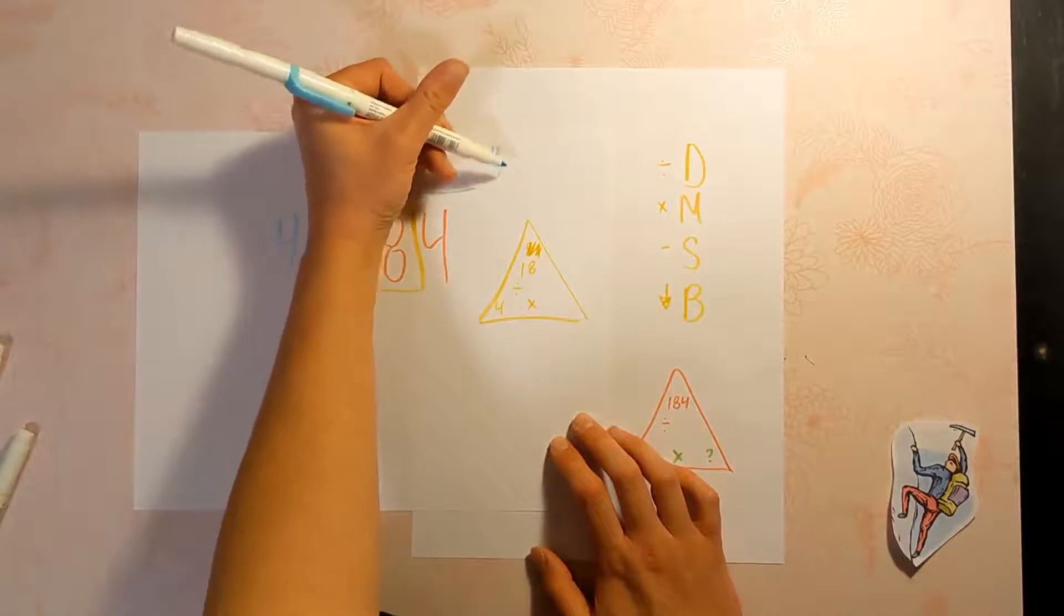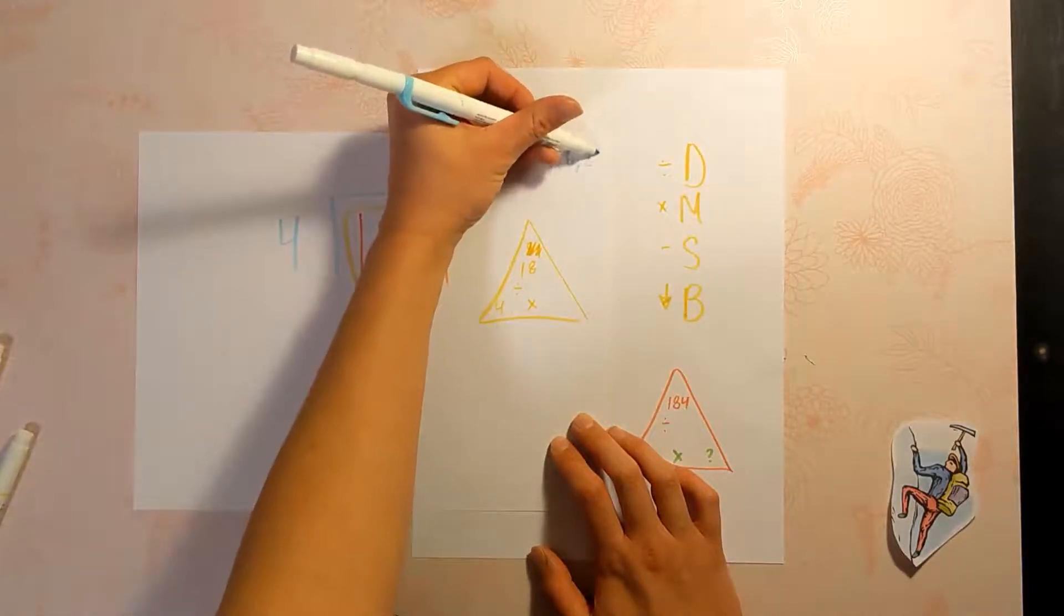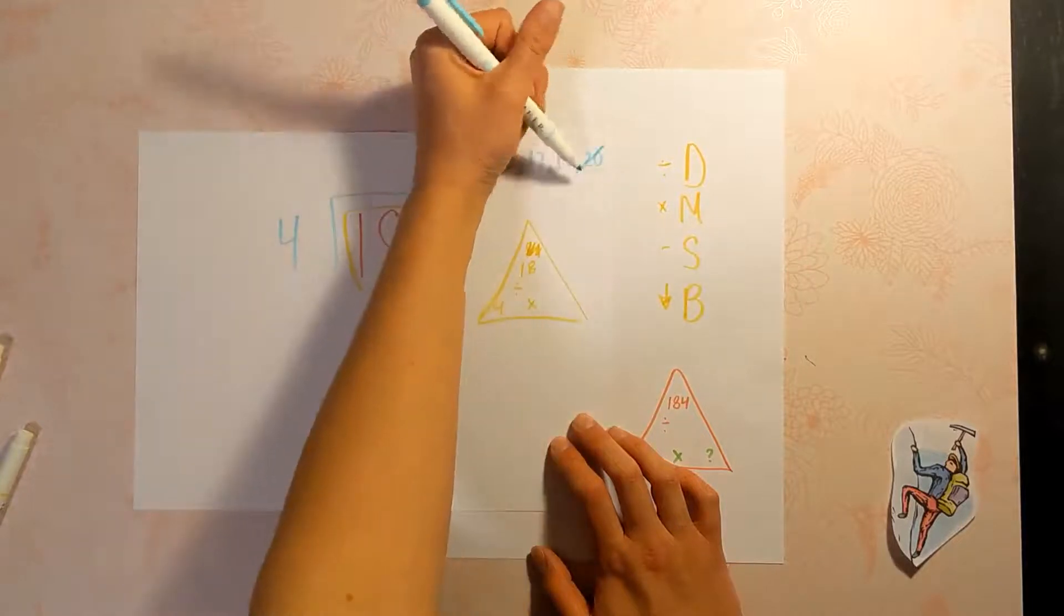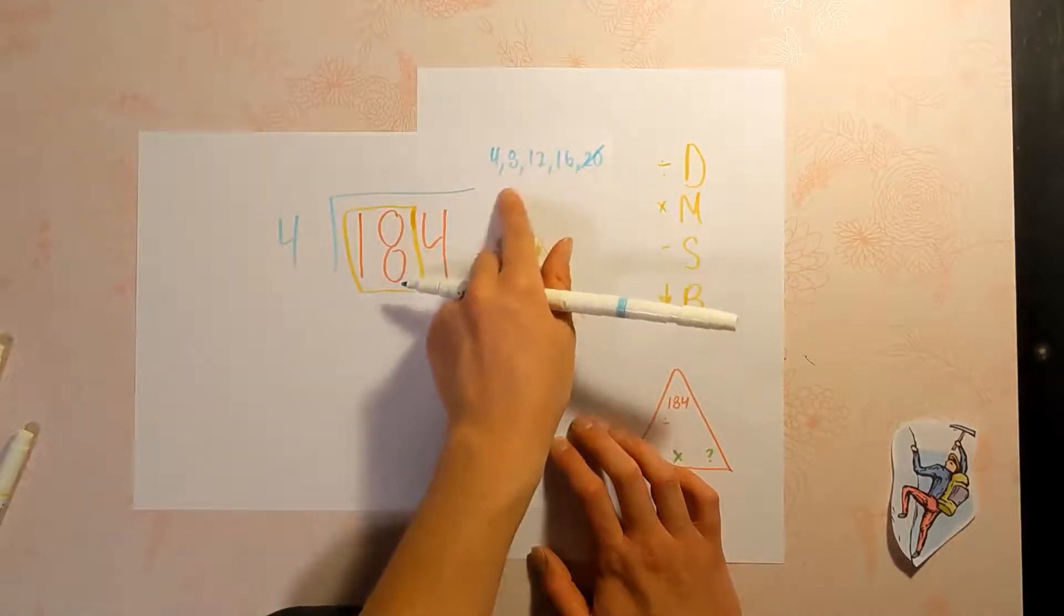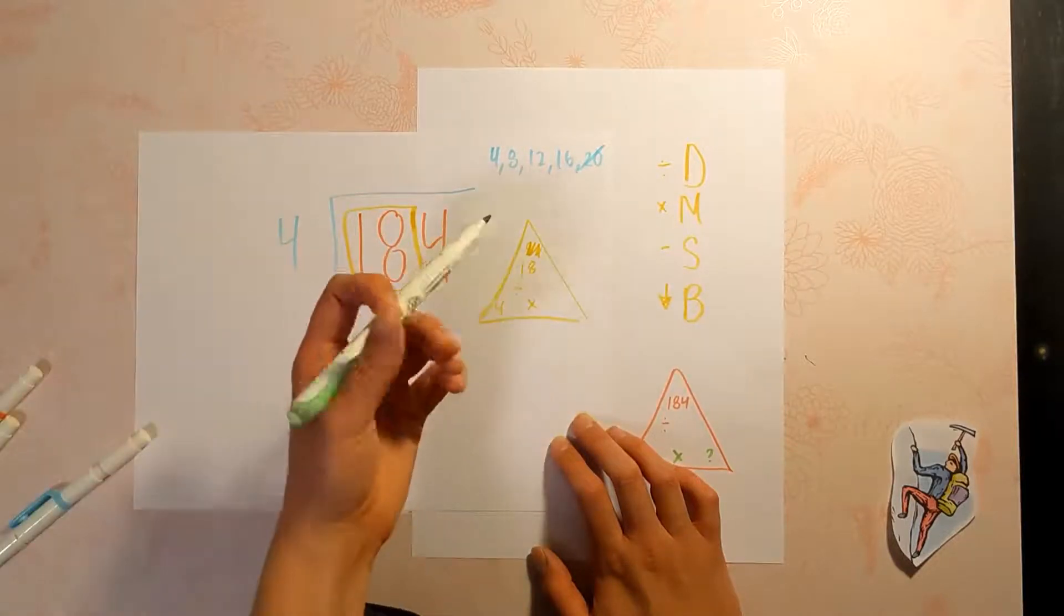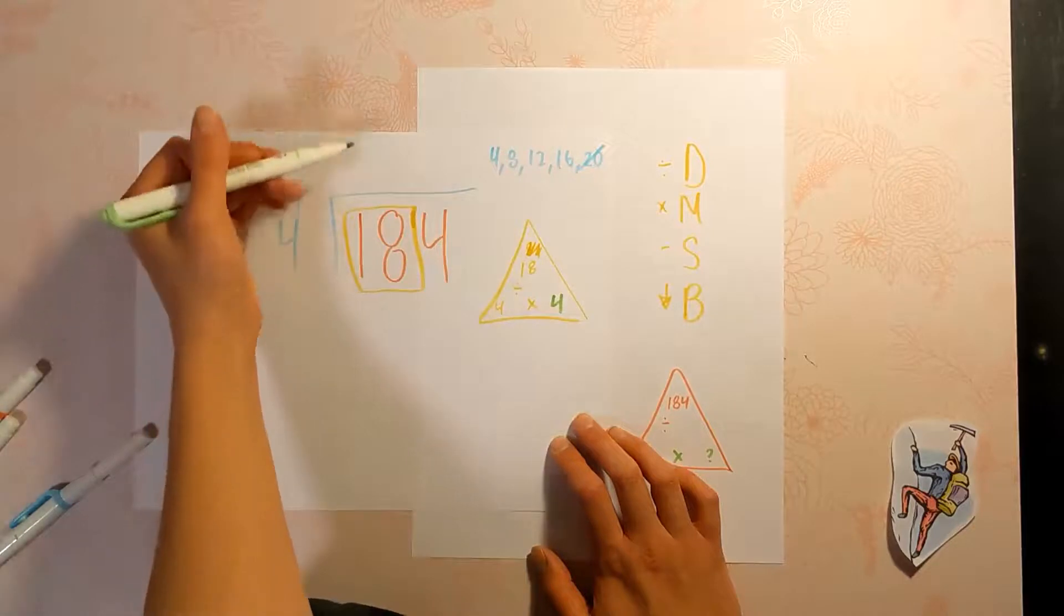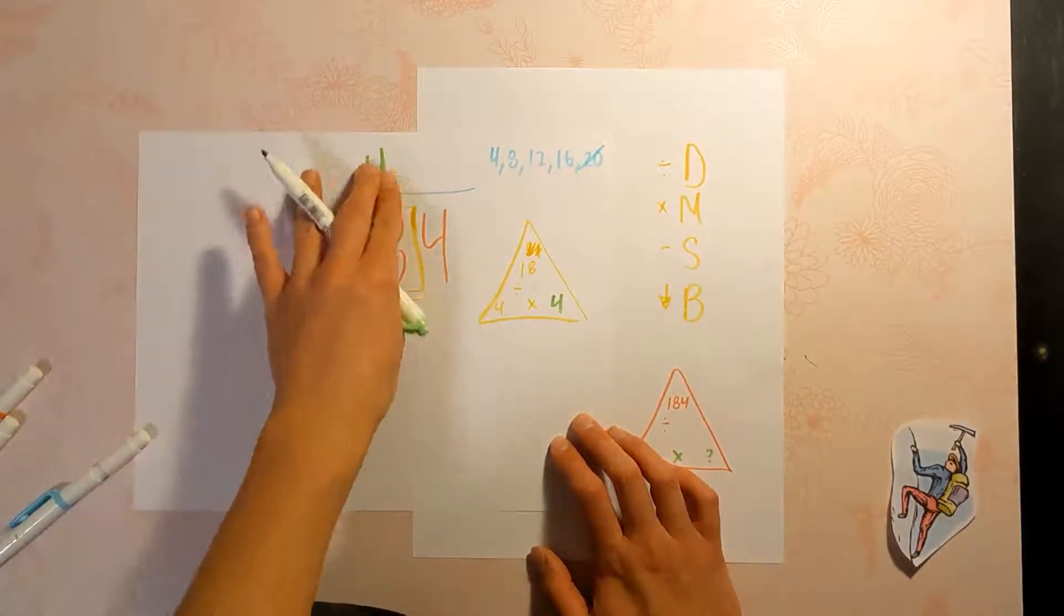Skip count your fours. How close can you get to 18 without going over? See that 20? We went over. One, two, three, four—four times four is 16. That's as close as we can get. So 18 divided by four is four with a remainder. Put that up here on top of the 18.